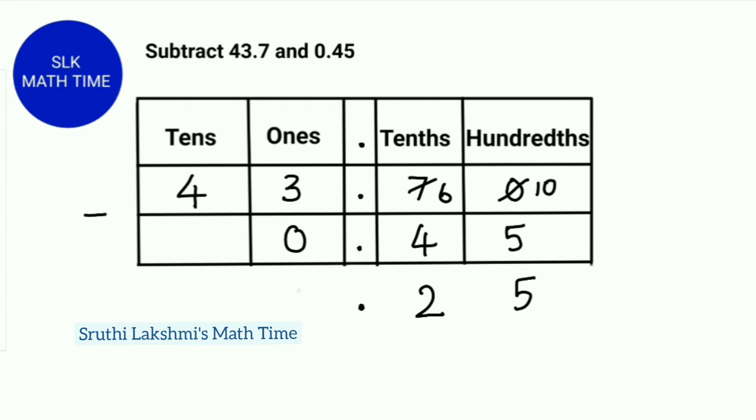Then we do 3 minus 0 which is 3. Next we write the 4 as it is. So 43.7 minus 0.45 is 43.25.